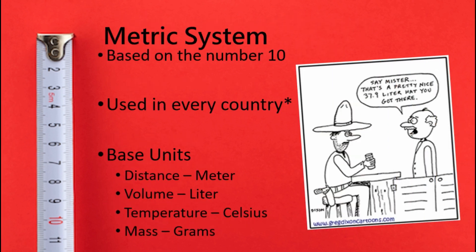Now, to everybody's favorite system — the metric system. It's based on the number 10. They got that number by looking at longitude and latitude on the Earth, and broke it down into different fractions getting to the number 10. It's used in every country for science, and commonly used in most countries, with the exception of the U.S. and another small country.